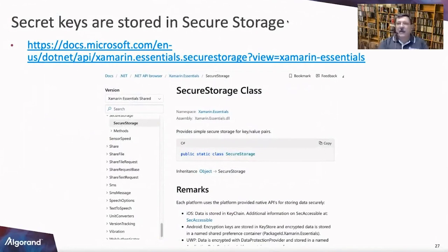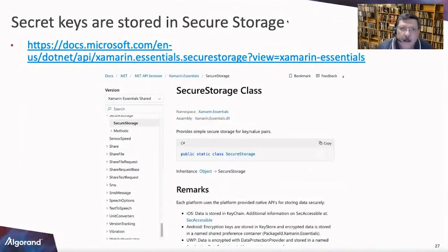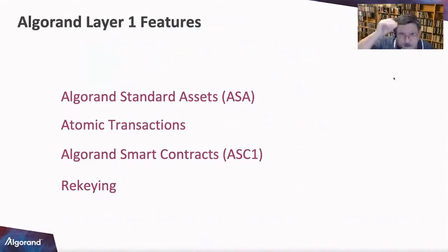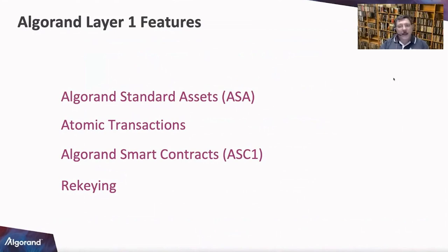Where do you store the keys? No matter what solution you build, you always have to figure out what to do with private keys. There's a secure storage class, part of the Xamarin Essentials NuGet package — James Montemago wrote all of these. If you were building a wallet-type app, this would be a good class to use. The solution covers Algorand Standard Assets (ASA) — tokens and NFTs, fungible and non-fungible — atomic transfers, smart contracts (ASC1, stateful and stateless), and re-keying.